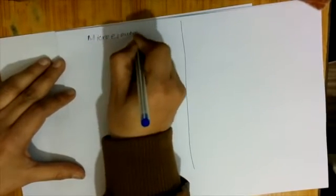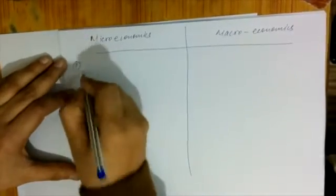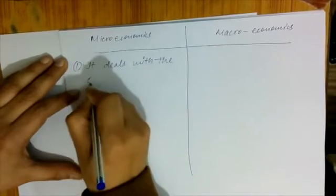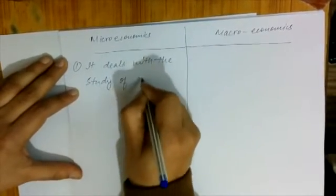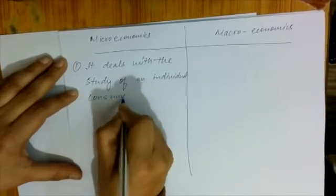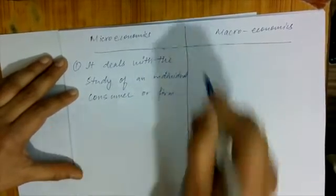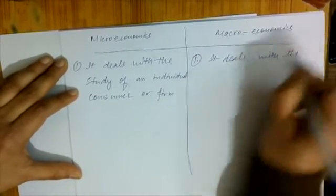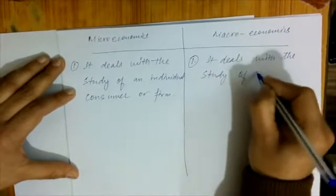Next comes a commonly known topic: the difference between Microeconomics and Macroeconomics. Microeconomics deals with the study of an individual consumer or firm. On the other hand, Macroeconomics deals with the study of the whole economy.